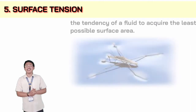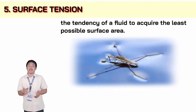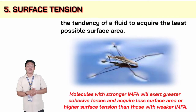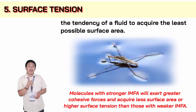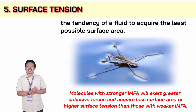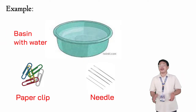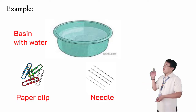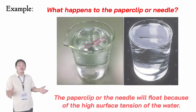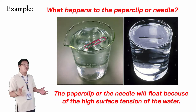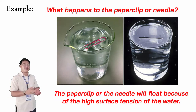Next is surface tension. Surface tension is the tendency of a fluid to acquire the least possible surface area. Molecules with stronger intermolecular forces will exert greater cohesive forces and acquire less surface area, or higher surface tension. For example, if you gently place a paper clip or needle on the surface of water, it will float because of the high surface tension of water molecules.